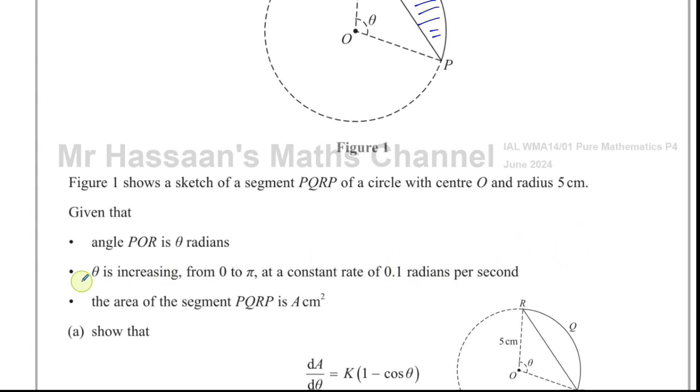Theta is increasing from 0 to pi at a constant rate of 0.1 radian per second. So basically, theta is increasing at a rate of 0.1 radians per second. What we can say is that the rate of change of theta with respect to time, dθ/dt, is equal to 0.1 radians per second. That's what that's telling us mathematically. This is what that means as a mathematical statement.